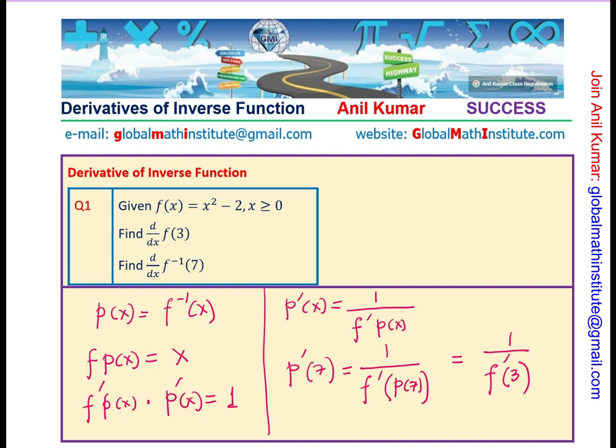So, since we know the derivative at 3 is 6, we can write this as 1 over 6 as our answer. You see how we got the solution for part b.